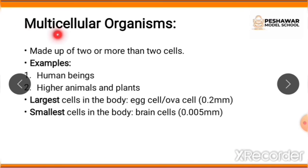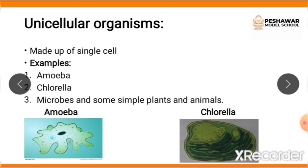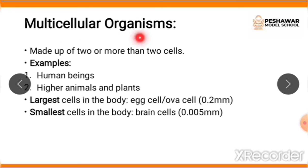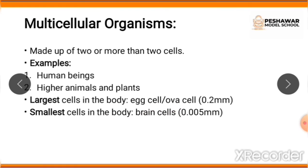Multicellular organisms are those organisms made up of many cells — two or more cells. Examples include human beings, higher animals, and plants. An important fact to note: the largest cell in the body is the egg cell or ovum, which measures about 0.2 millimeters, and the smallest cell is the brain cell, which measures about 0.005 millimeters. This could come up in MCQs.